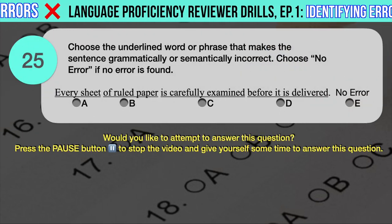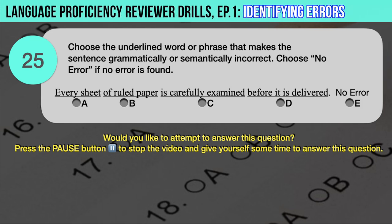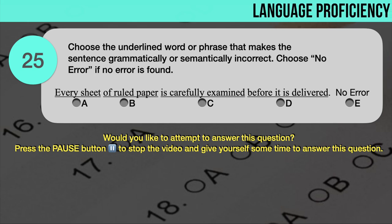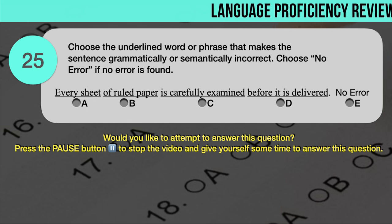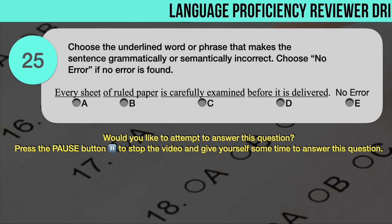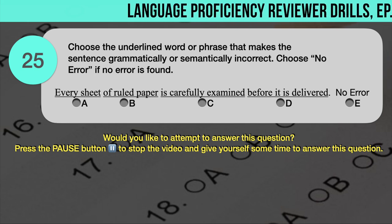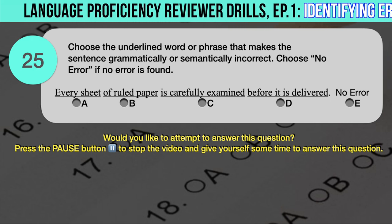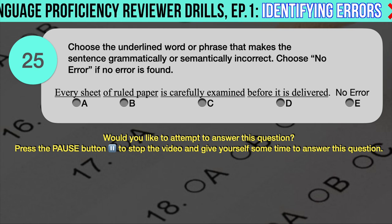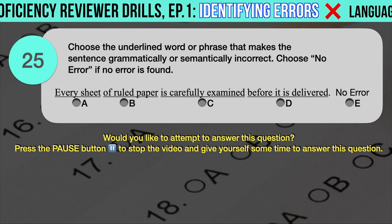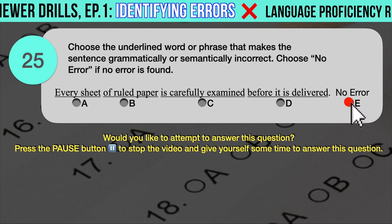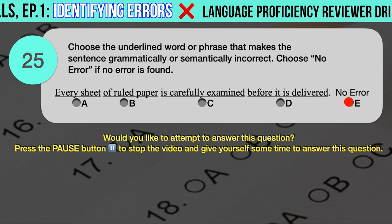Drill question number 25. 'Every sheet of ruled paper is carefully examined before it is delivered.' The underlined words are: A. Every sheet, B. Of ruled paper, C. Is carefully examined, D. Before it is delivered. The correct answer is E — there appears to be no error in the given sentence.